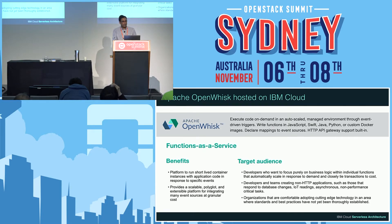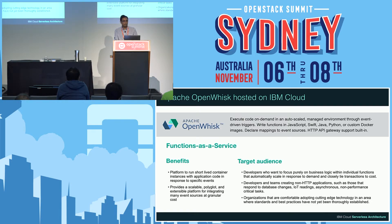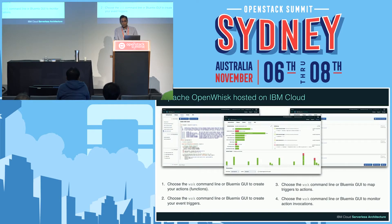The third option is functions as a service, where we have a platform that runs a really short-lived container instance. In this environment, there is no infrastructure to care about. All we do is define the function, define the triggers, define the rules. When we invoke the function, it is up to the provider to set up the container it's going to run in, bring up the container, let it run, and then bring it down. On the IBM Cloud, we have a WSK command that allows you to create the functions, define the rules and triggers, link them together, and monitor all the invocations.